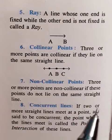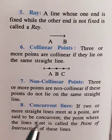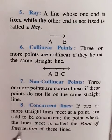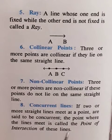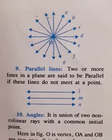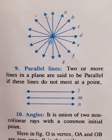Concurrent line: if two or more straight lines meet at a point are said to be concurrent. The point where the lines meet is called the point of intersection of these lines. Here you can see two or more lines intersect at a point.